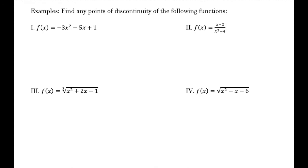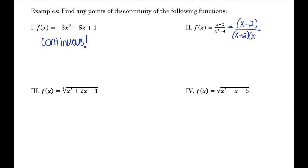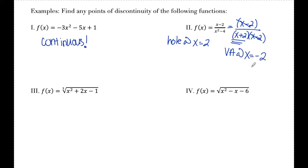Find any points of discontinuity. Number one: f of x is a quadratic — a polynomial — so this is continuous everywhere. Number two: I have a fraction of polynomials, so I factor the denominator, which gives x plus 2 and x minus 2. Since the factor x minus 2 cancels, I have a hole at x equals 2. Since x plus 2 remains in the denominator, I have a vertical asymptote at x equals negative 2. So there are two points of discontinuity: x equals 2 and x equals negative 2.